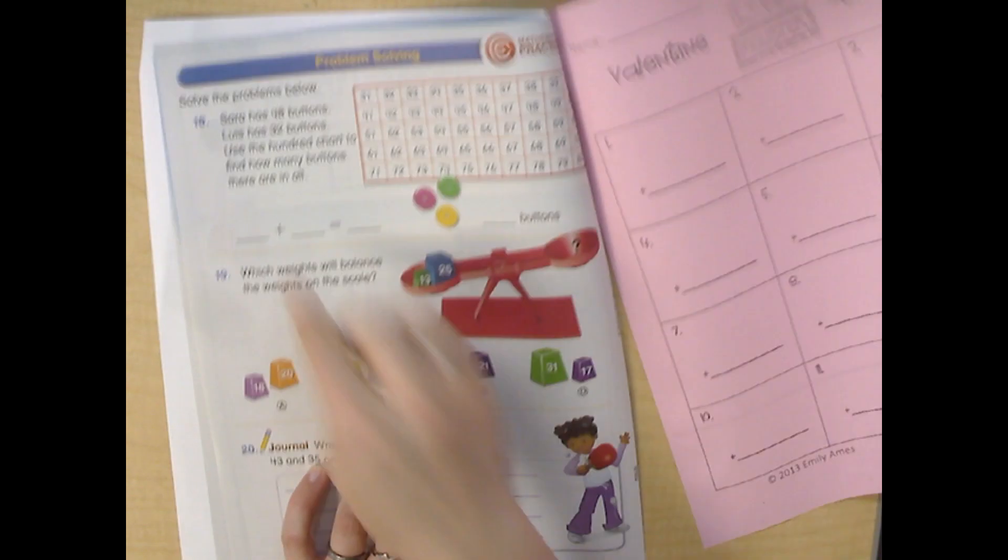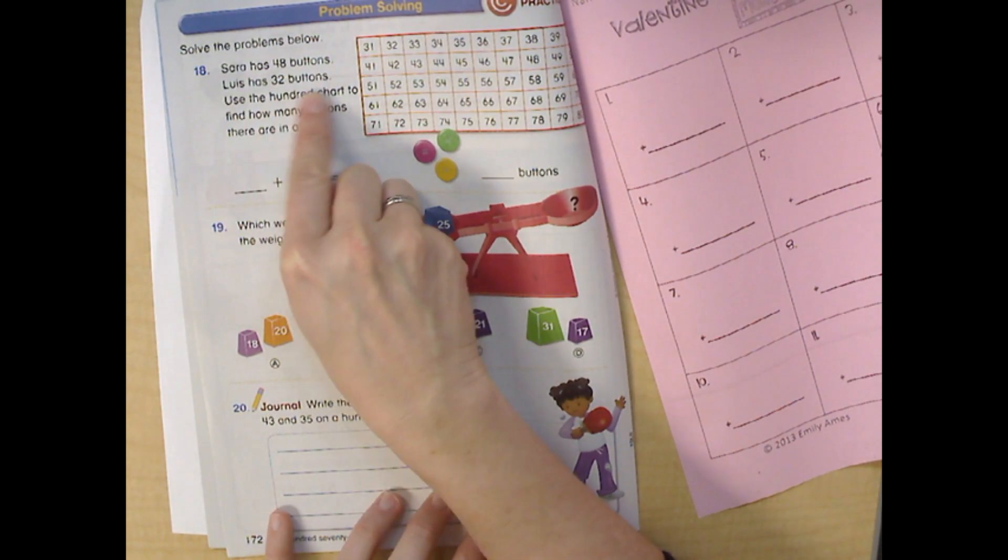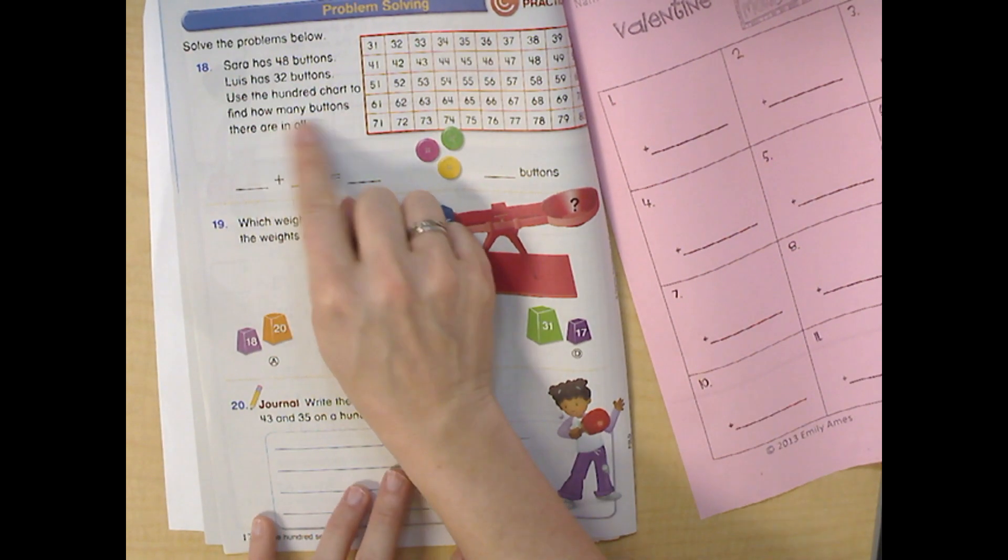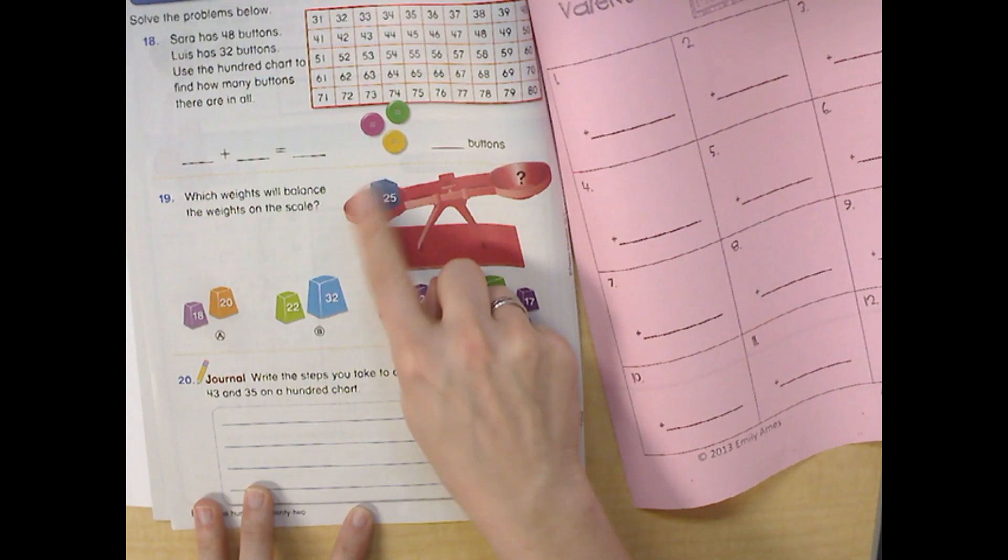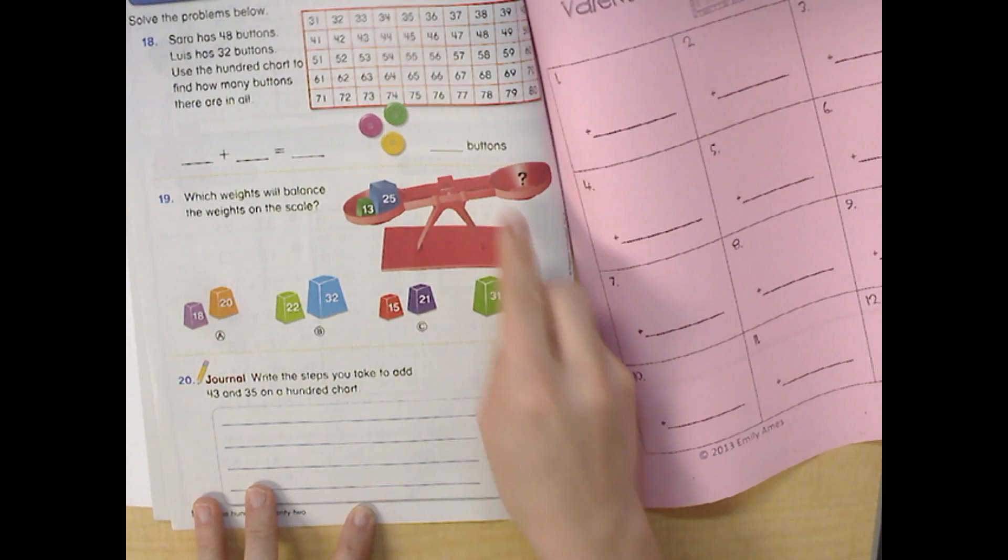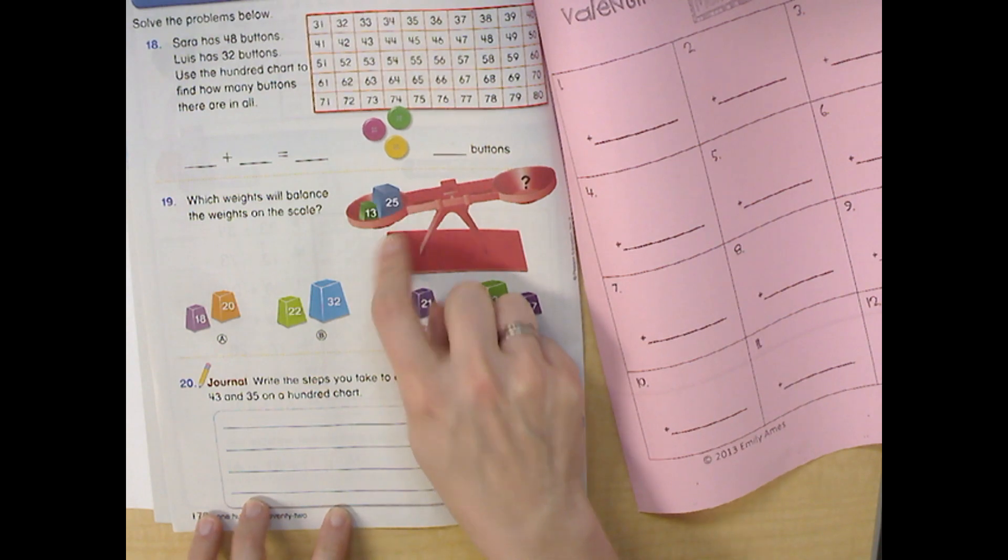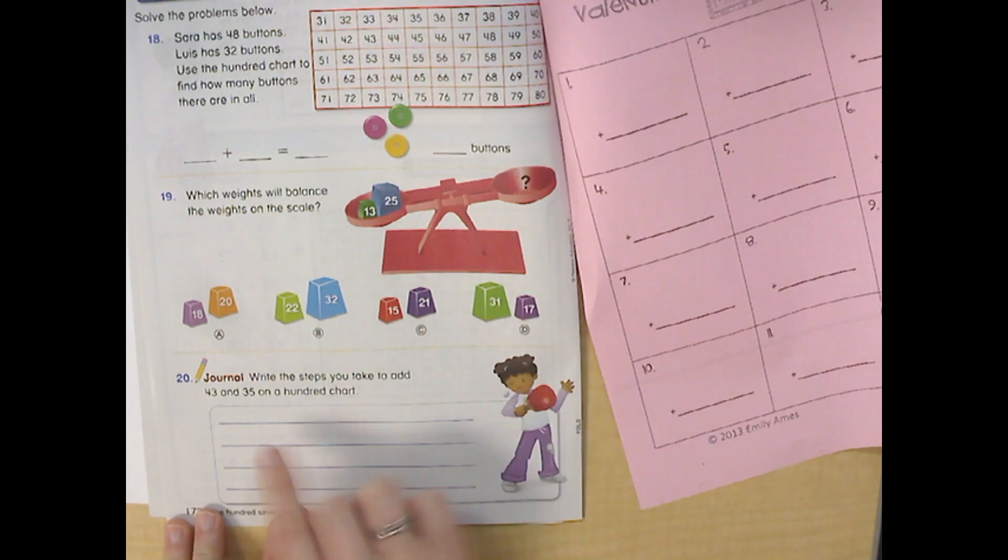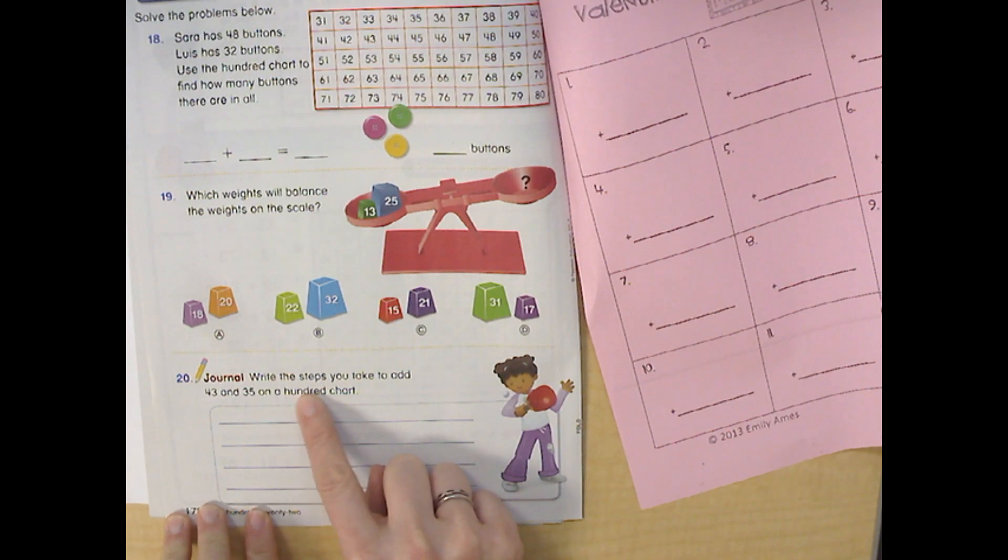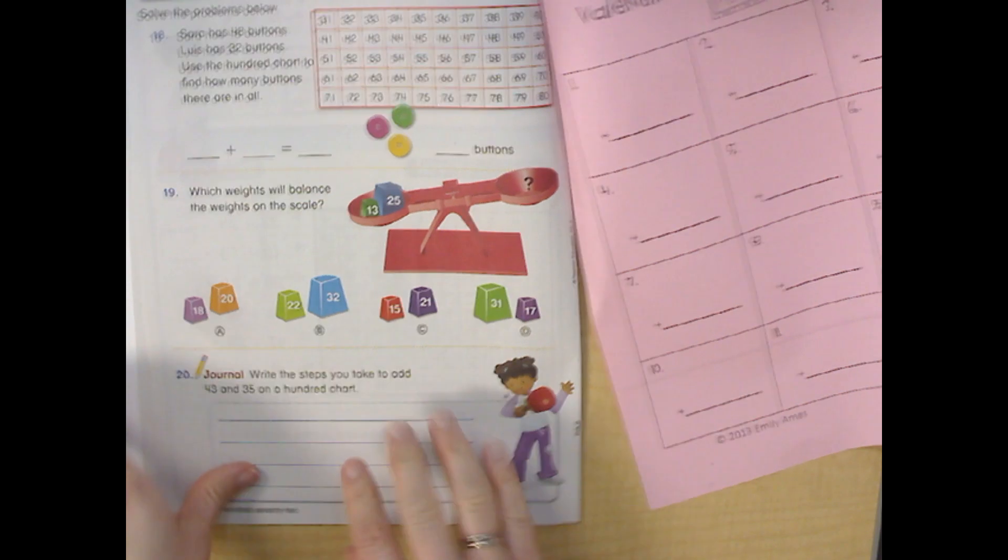So, on the back, the story problems are Sarah has 48 buttons, Luis has 32 buttons. Use the 100 chart to find how many buttons there are in all. Which weights will balance the weights on the scale? So, if there's 13 plus 25 here, how much is that in all? And how much do you need over here? So, if 13 plus 25 is 38, what two numbers do you put together to get 38 over here? Next, this says, write the steps you take to add 43 and 35 on a 100s chart. So, you need your 100s chart, and you're going to explain how you would add it.